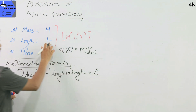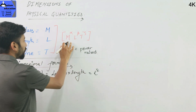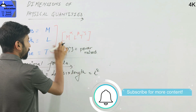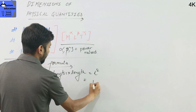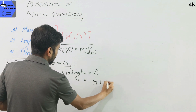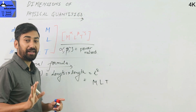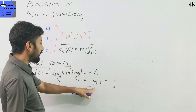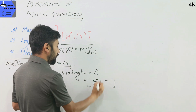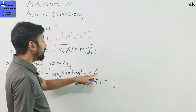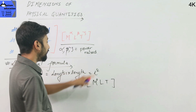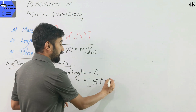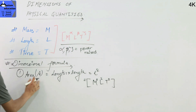The dimensional formula for area uses capital L for length. M — mass — is the same, and T — time — is the same. So we write the dimension formula as M, L, T inside square brackets. The length power is 2, mass power is 0, and time power is 0. So the dimensional formula of area is [M⁰L²T⁰].